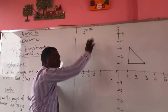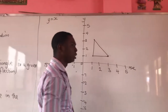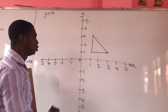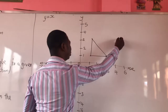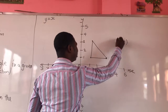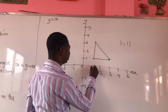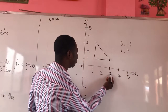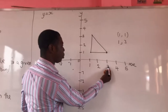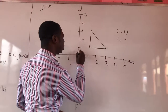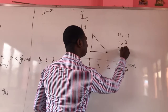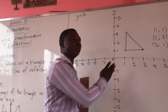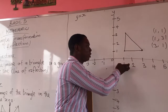So let's write the coordinates of this triangle. The first point: you can see this one — one and one. The next coordinate is one and three. And the next one is three and one. When we write coordinates, we always use the x-axis first and then the y-axis — the meeting point of x and y.